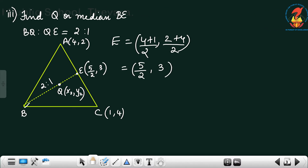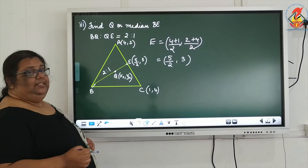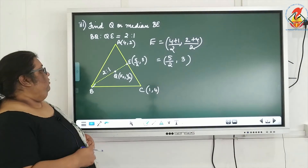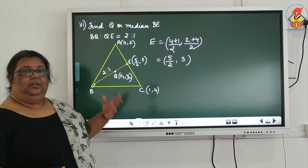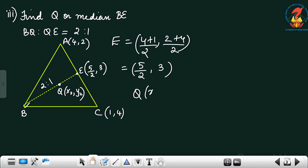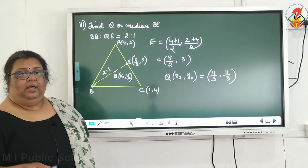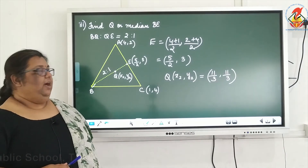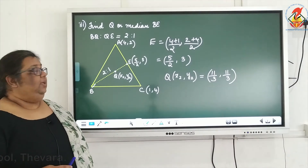Now BQ to QE — M1 to M2 — is in the ratio 2 to 1. We need to find the coordinate of Q. Using the section formula and after doing the calculation, you will get the answer as (11/3, 11/3). You need to write the section formula and simplify it; the answer is (11/3, 11/3).